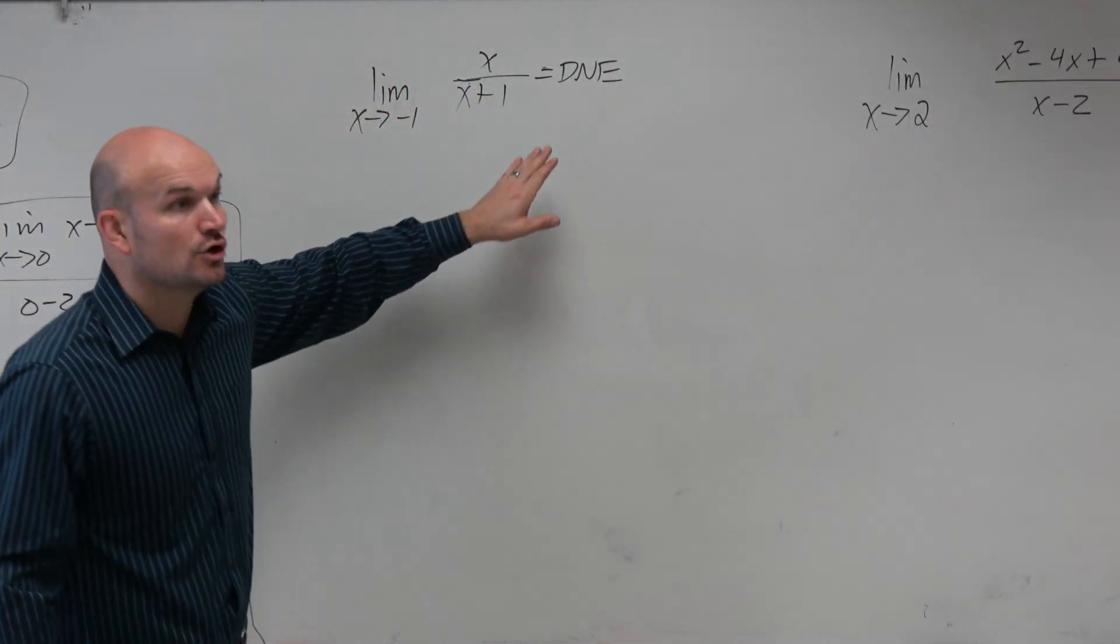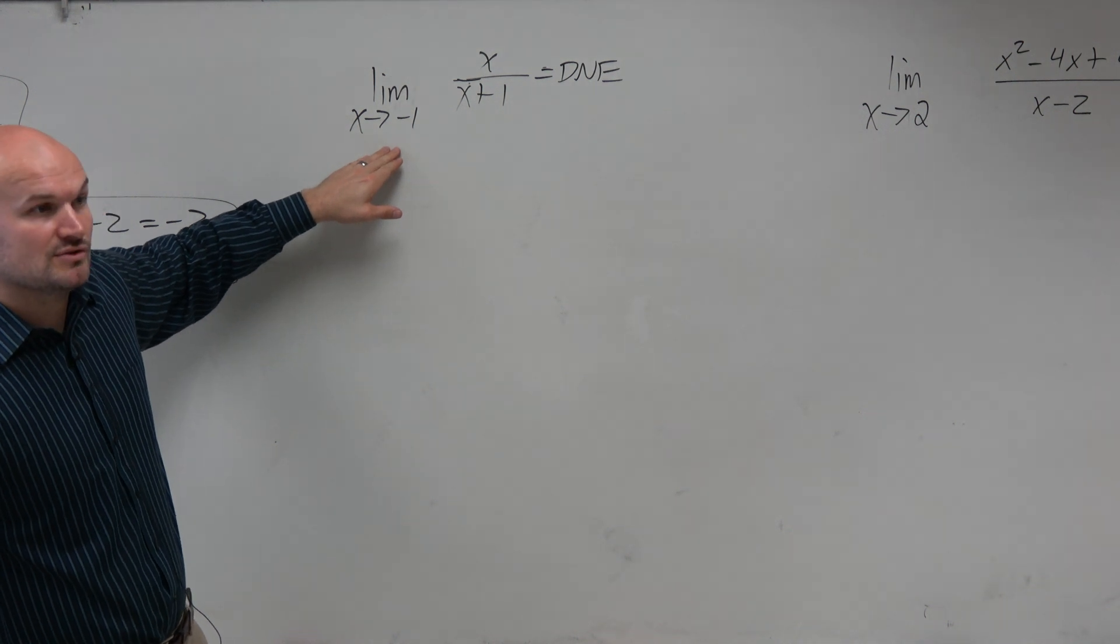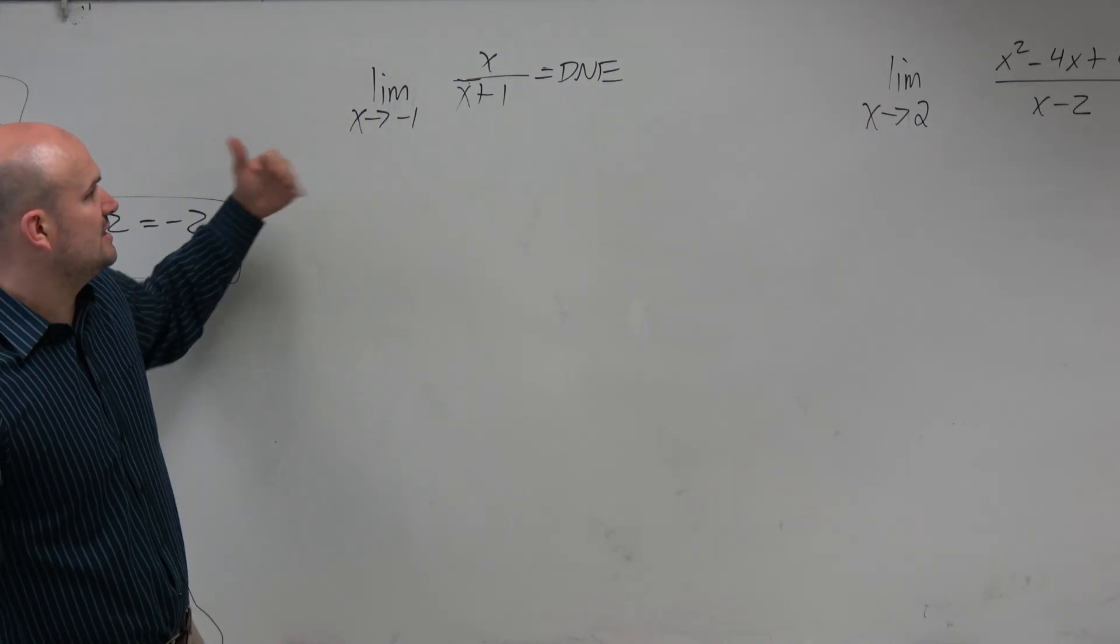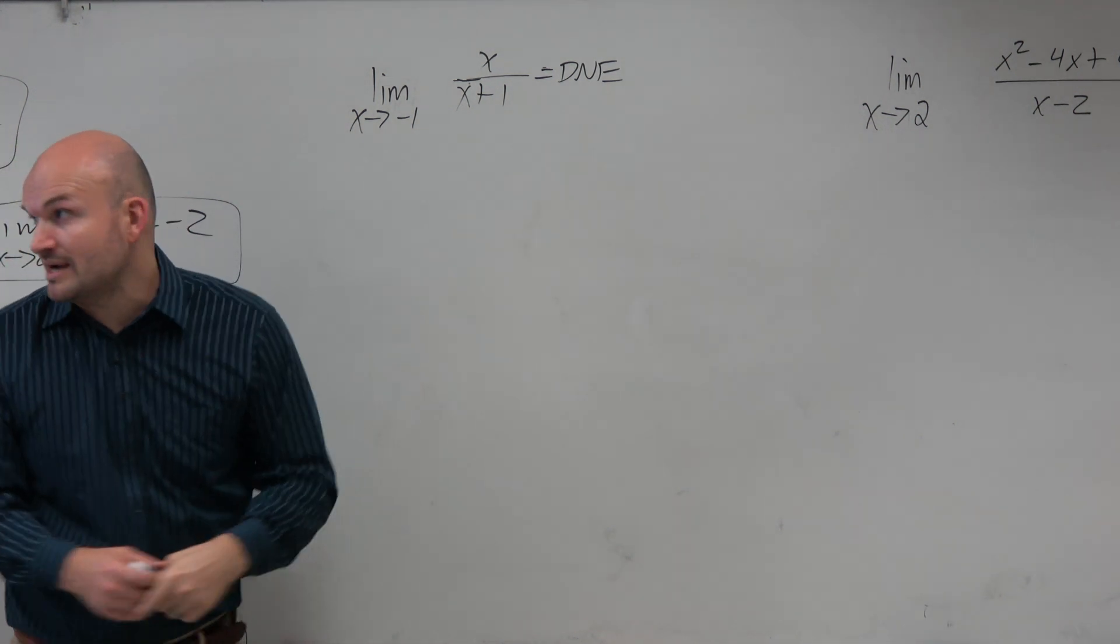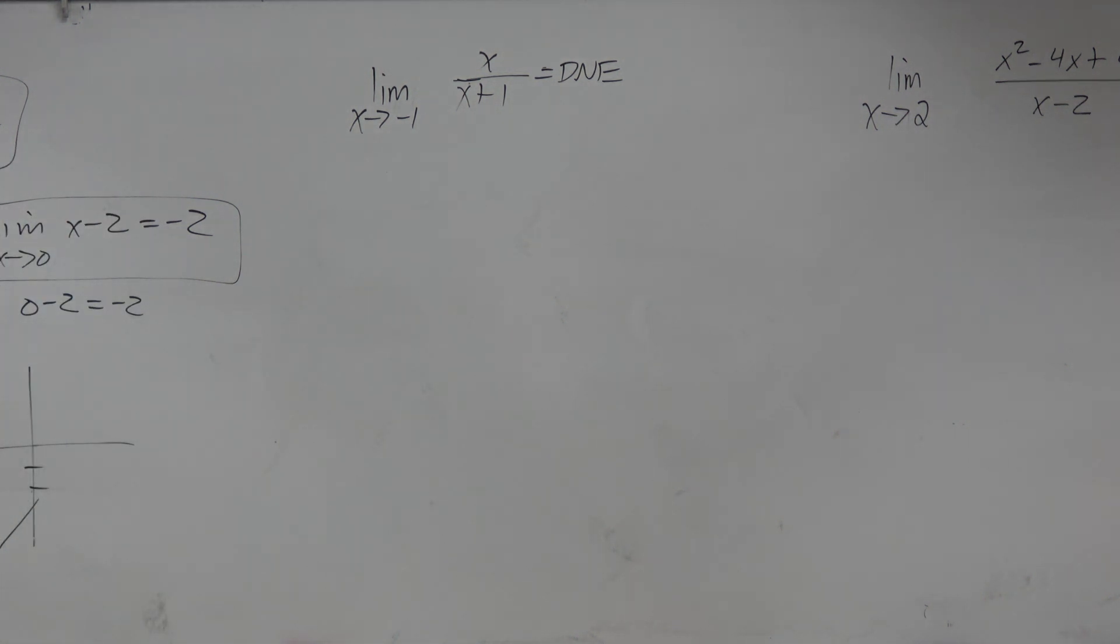So what you could do is go through your table function and get numbers really close to negative 1 from the left, as well as get numbers really close to 1 from the right. And to save ourselves some time, because I wasn't planning on doing that, I'm just going to type this into our calculator. Was it x divided by x minus 1? Yes. OK.